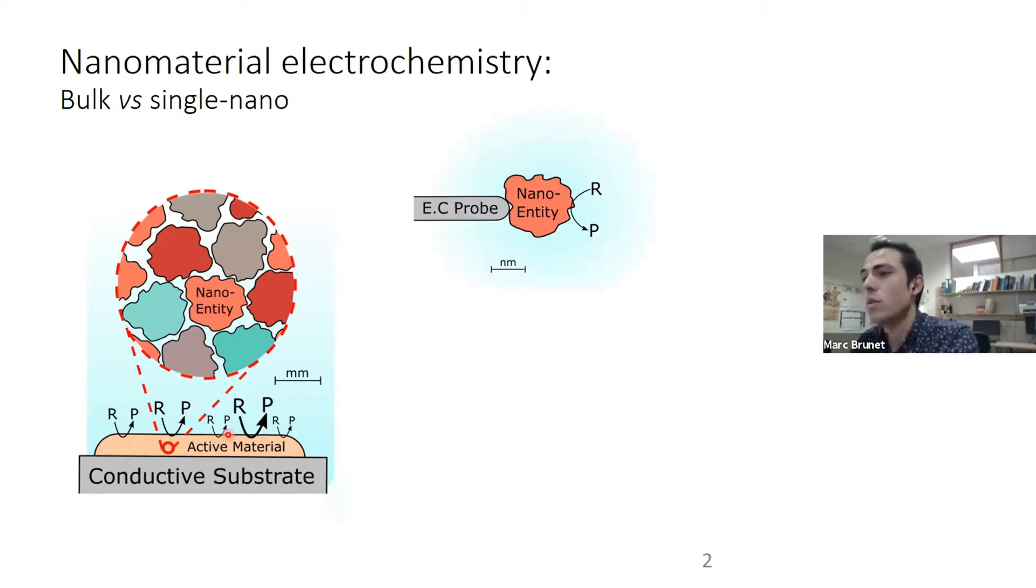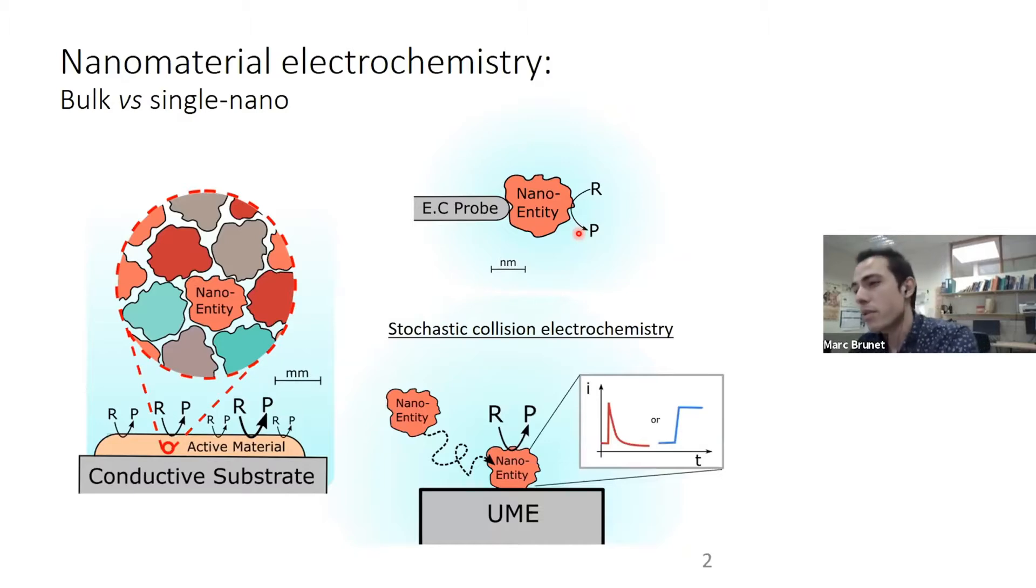So the key to resolve this problem is to develop techniques that restrict the electrochemical measurement to just one single entity at a time. Those electrochemical techniques can provide much more fundamental insights into electrochemistry at the nanoscale, as well as useful information about the heterogeneity.